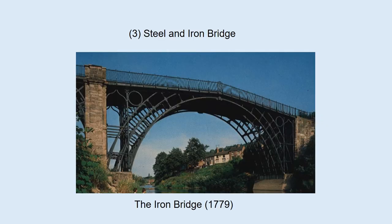Third, bridges made of steel or iron. Steel is a major material for modern bridges. In the early days, iron was used. This is the first metal bridge — the Iron Bridge in the UK.